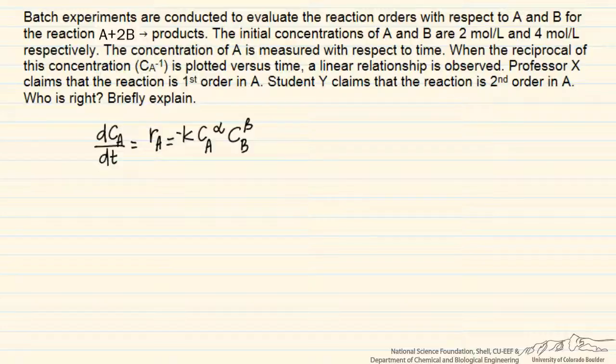The trick in this problem is that the concentration of B initially is equal to double the concentration of A. And in fact, at all times in the reactor it's going to be double, because this is a stoichiometric reaction. Every time we consume a mole of A, we consume 2 moles of B, so we can write this relationship as being generally true.